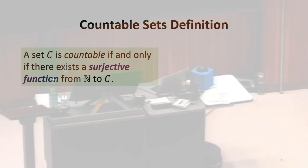Does this have to be a total function? So we're going from the natural numbers to c. Surjective means we've got at least one in. Is it okay if the function's partial? Yeah, so it's okay if the function's partial.